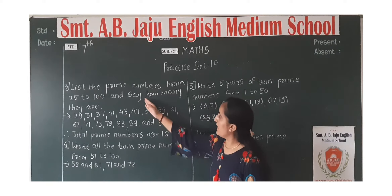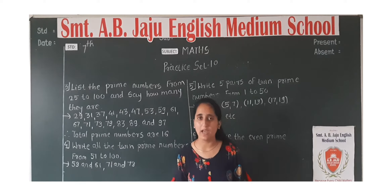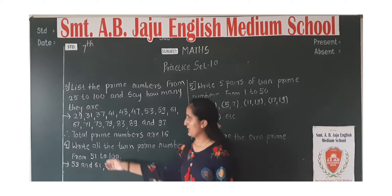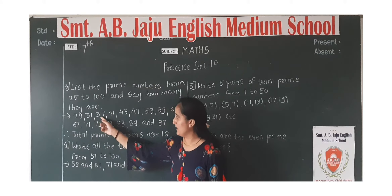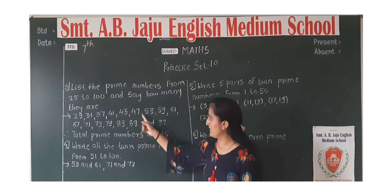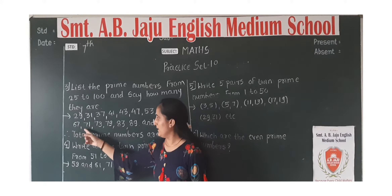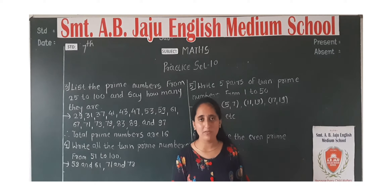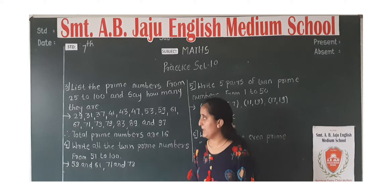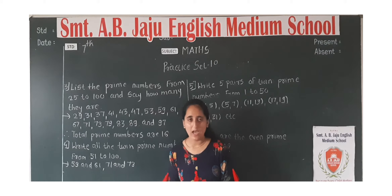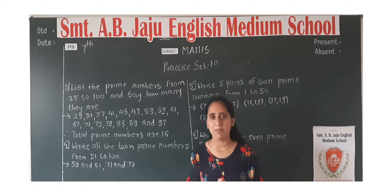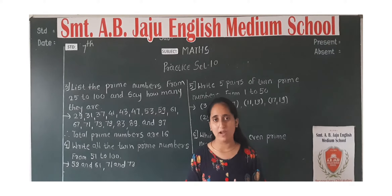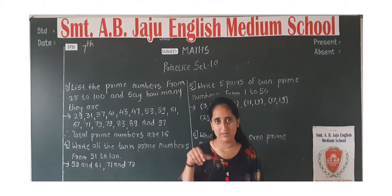Next part of the question is: say how many — kitne prime numbers hain. Hum ne counting karni hai — total prime numbers between 25 to 100 kitne hain. Very easy question. 25 to 100 ke beech kitne prime numbers hain, sari numbers list karke count karo.